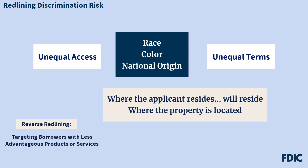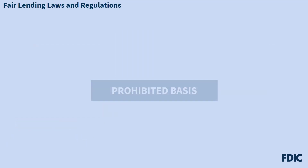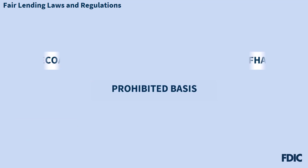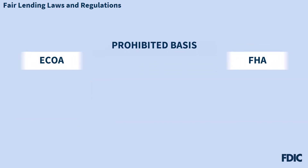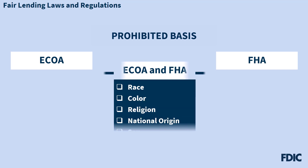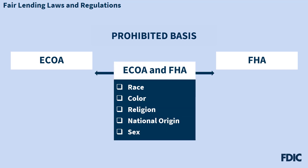But what is a prohibited basis? The prohibited bases are described in the two primary laws covering fair lending: the Equal Credit Opportunity Act, or ECOA, and the Fair Housing Act, or FHA. Both of these laws prohibit discrimination based on race or color, religion, national origin, and sex.